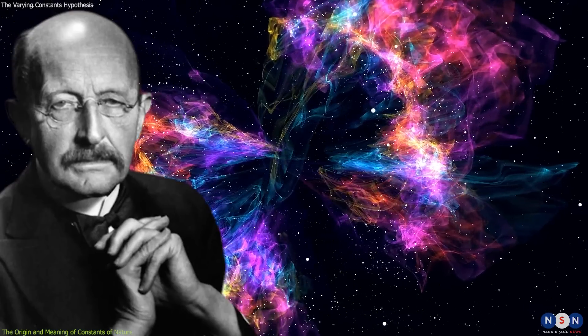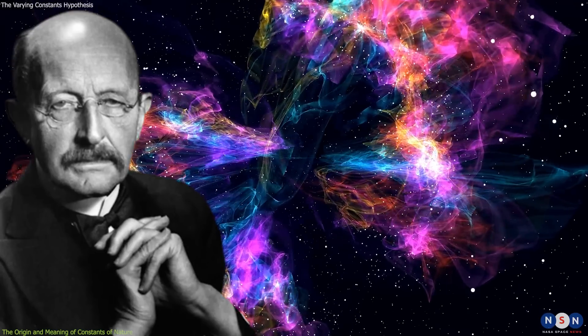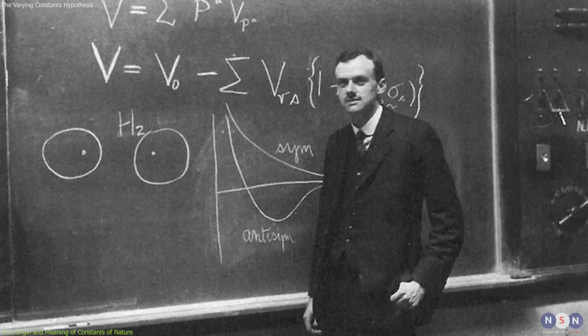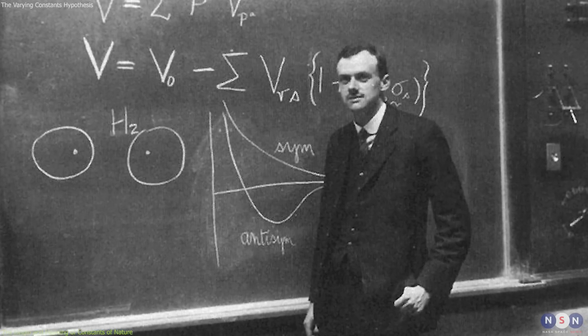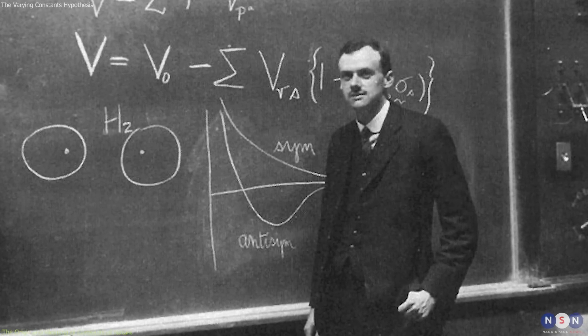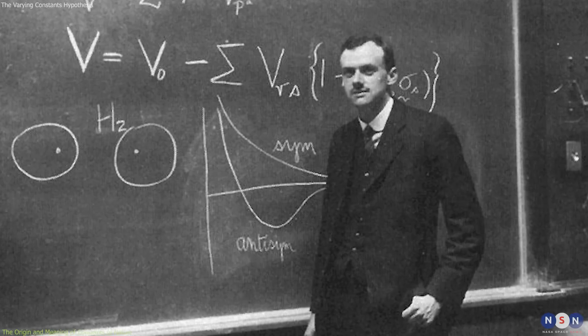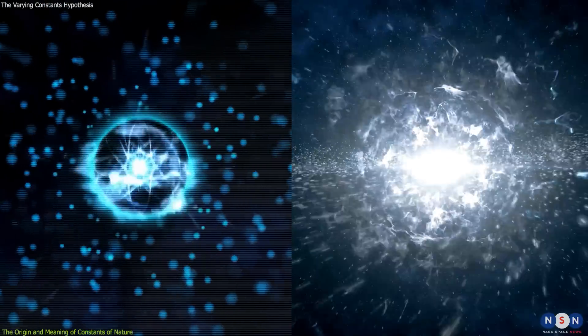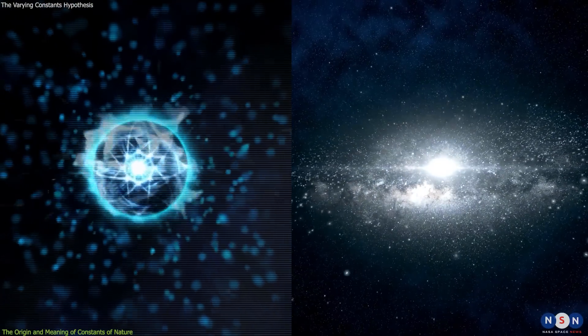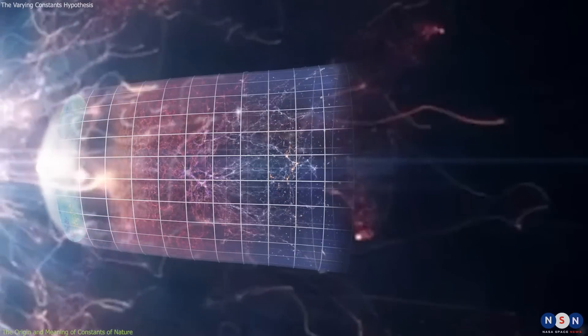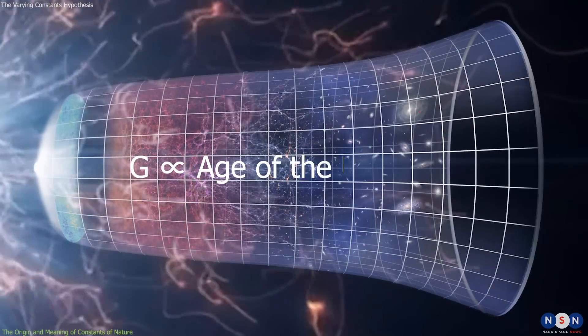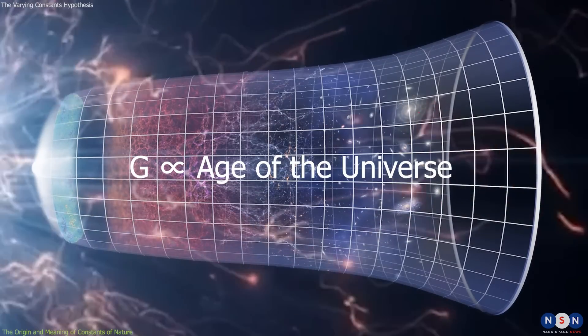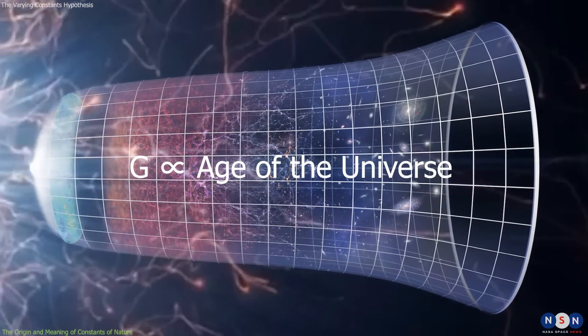However, not everyone agreed with Planck's view. In 1937, Paul Dirac proposed a radical hypothesis that challenged the constancy of one of these constants, the gravitational constant. He was inspired by a curious coincidence between some large numbers related to cosmology and atomic physics. He suggested that this coincidence could be explained if the gravitational constant was inversely proportional to the age of the universe.